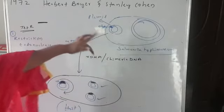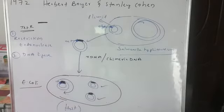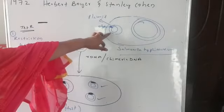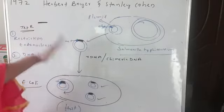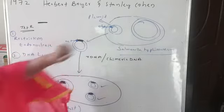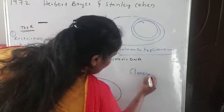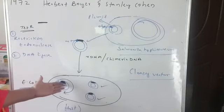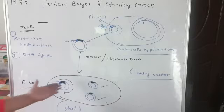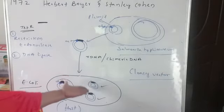So this plasmid is not only used as a vector, but also helps in increasing the number of the desired gene. Such a vector is known as a cloning vector. In this host, the gene of interest has increased its number — multiple copies have been obtained; clones have been obtained. We have increased the number of the tetracycline resistance genes.